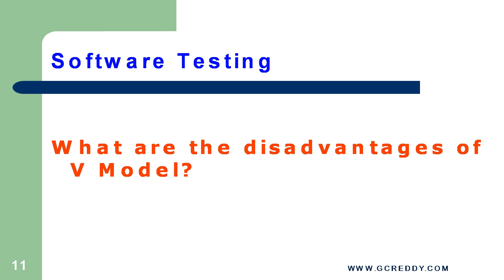What are the disadvantages of V-Model? 1. It is an expensive model, like the waterfall model, and needs a lot of resources, budget and time. 2. Coordination and maintenance are difficult. 3. Adoption of changes in requirements and adding new requirements in the middle of the process are difficult. 4. It needs an established process for proper implementation.